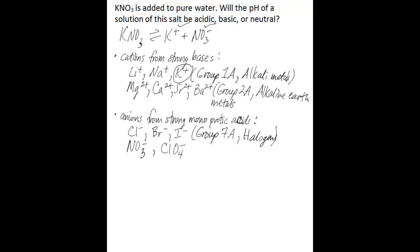If you look at the anions that come from strong monoprotic acids, you can see that nitrate is one of them. Nitrate will also not react appreciably with water. Therefore, the pH of a solution of potassium nitrate salt will be neutral.